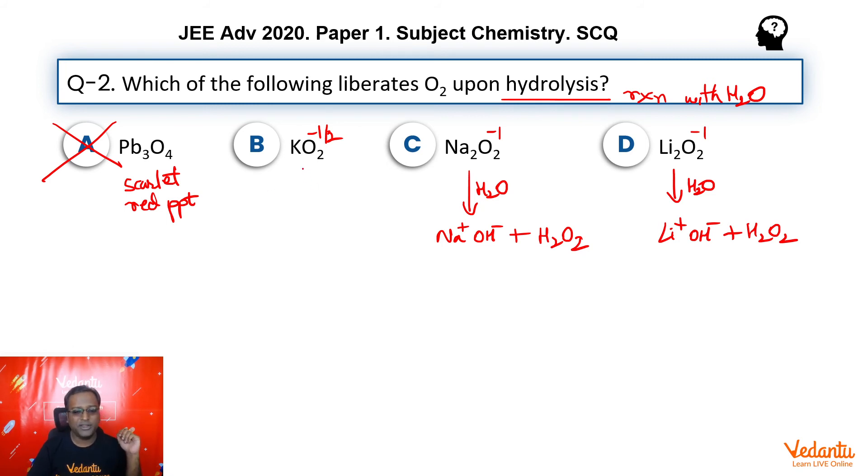But if we talk about this compound that is a superoxide in which oxygen is in minus half oxidation state. Now, this undergoes disproportionation reaction where O2 in which oxygen is in zero oxidation state as well as H2O2 in which oxygen is in minus one oxidation state is formed and the cation stays as K plus and OH minus.